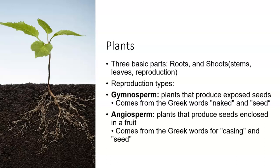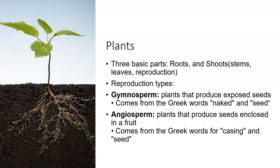Plants have three basic parts: roots and shoots. Shoots cover stems, leaves, and reproduction. Once a plant starts reproducing, it might involve pollen, and the plant may be either a gymnosperm or an angiosperm. You're going to want to know the difference between these reproduction types — they are definitely common on exam three, and I would not be surprised if exam four had a question on gymnosperms or angiosperms. Know what constitutes each type.